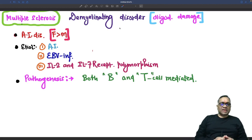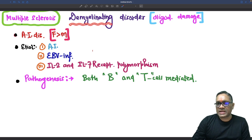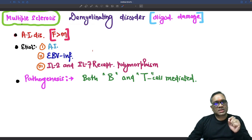Hello everyone, in this high-yield shot I'm going to tell you about multiple sclerosis, which is a demyelinating disorder. This means there will be damage to oligodendrocytes.